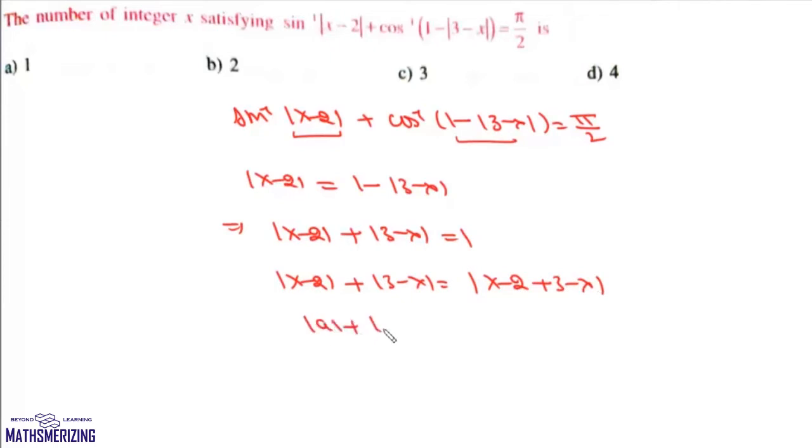This is |a| + |b| = |a+b|, which is true if and only if a and b have the same sign, meaning both should be greater than or equal to 0.